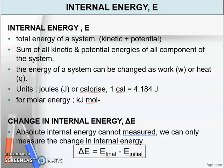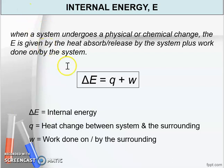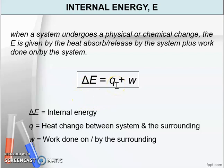Because internal energy is a state function, we cannot measure the absolute internal energy — we can only measure the change in internal energy. The change in internal energy is delta E, which equals E final minus E initial, or equals Q plus W: delta E = Q + W. When a system undergoes a physical or chemical change, delta E is given by the heat absorbed or released by the system plus the work done on or by the system. Q is the heat change between the system and the surrounding, and W is the work done on the system or by the surrounding.